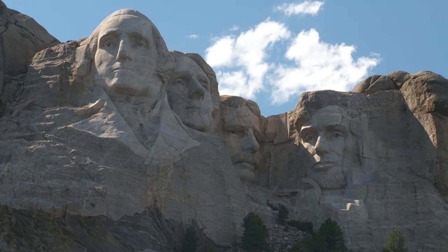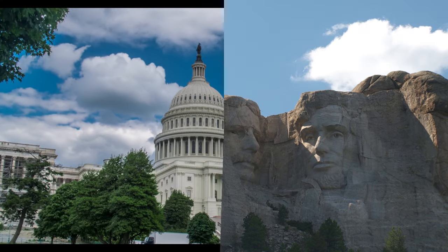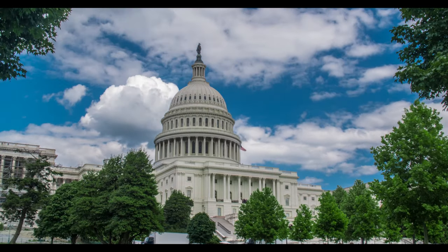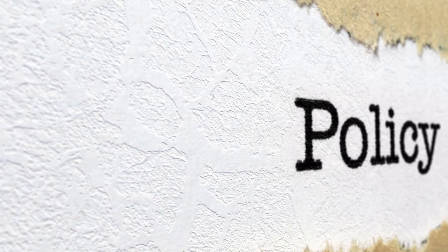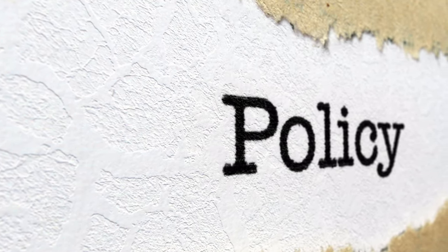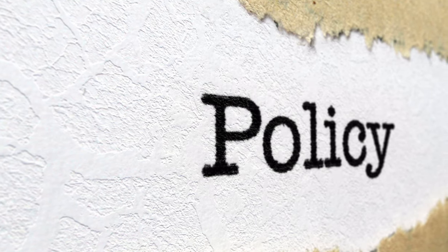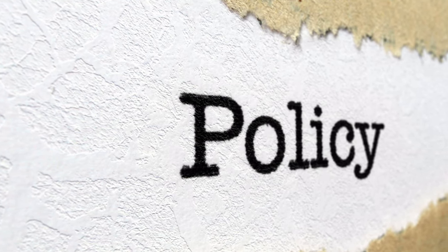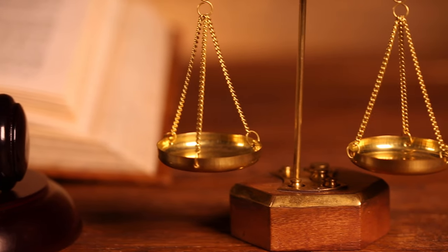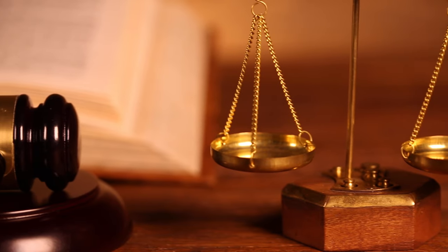Slavery was also a contentious issue, with the delegates debating the insertion of the Fugitive Slave Clause, whether to allow the abolition of the slave trade, and whether slaves were to be counted in proportional representation. Most of the time during the convention was spent deciding these issues.